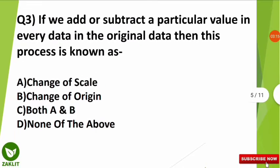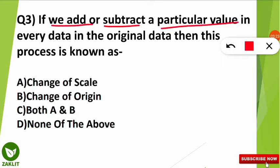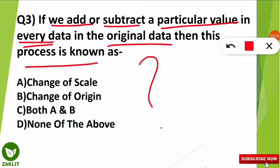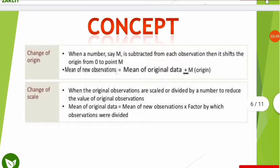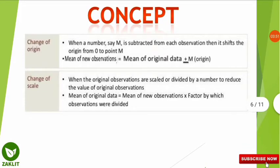The next question is conceptual but still easy. If you add or subtract a particular value to every data point in the original dataset, this process is known as what? The correct answer is option B — this is called a change of origin. We should understand the difference between change of scale and change of origin.